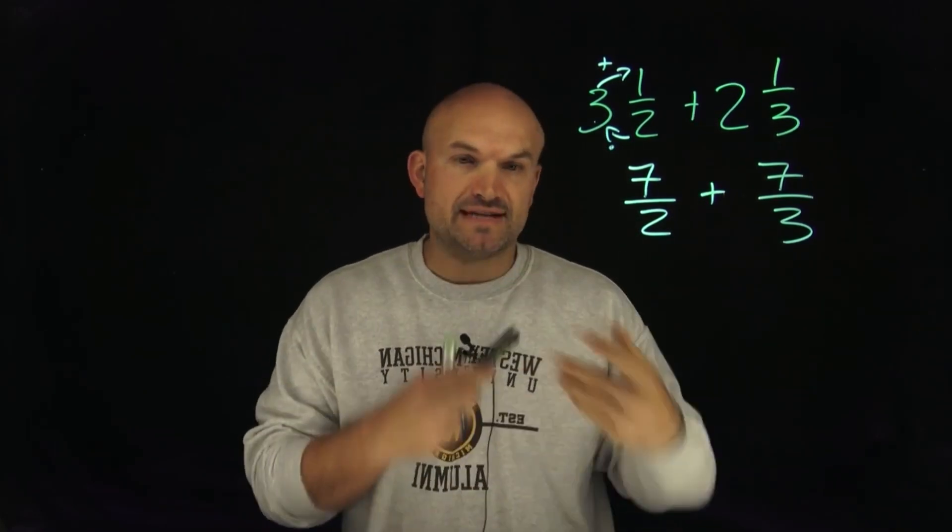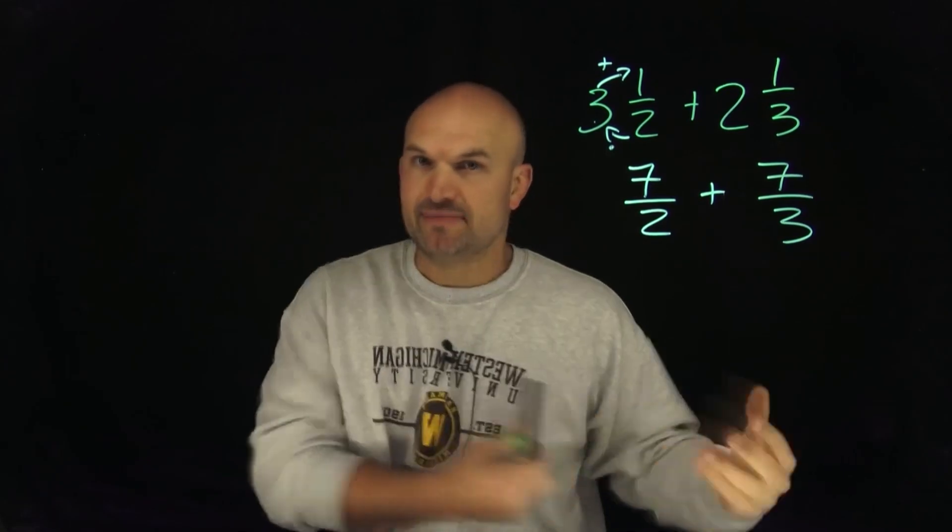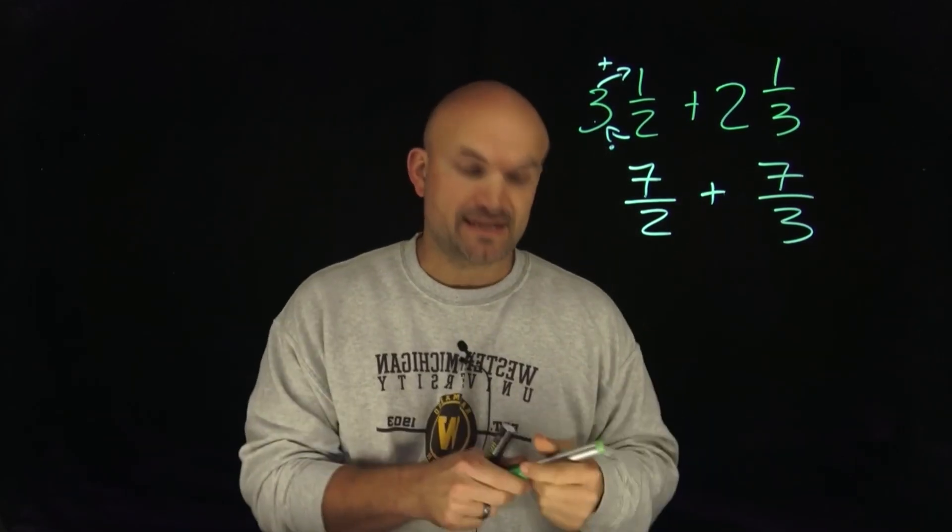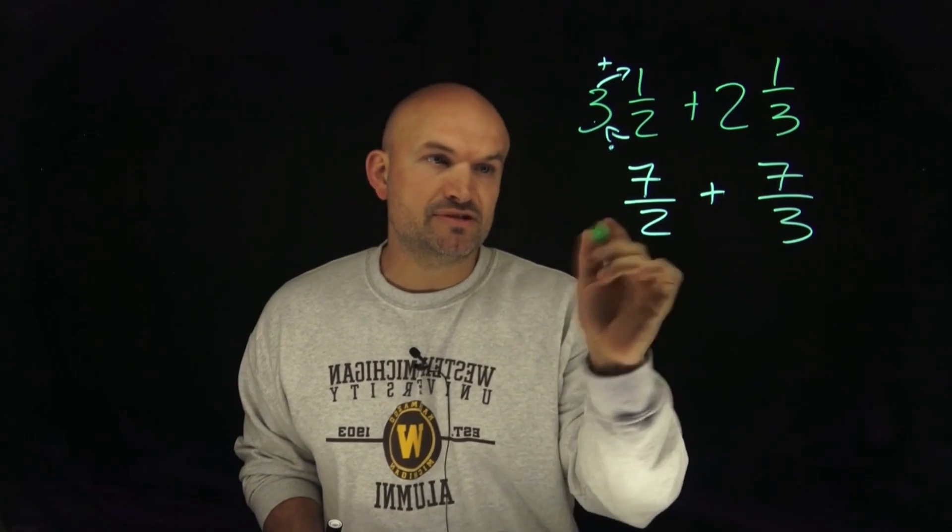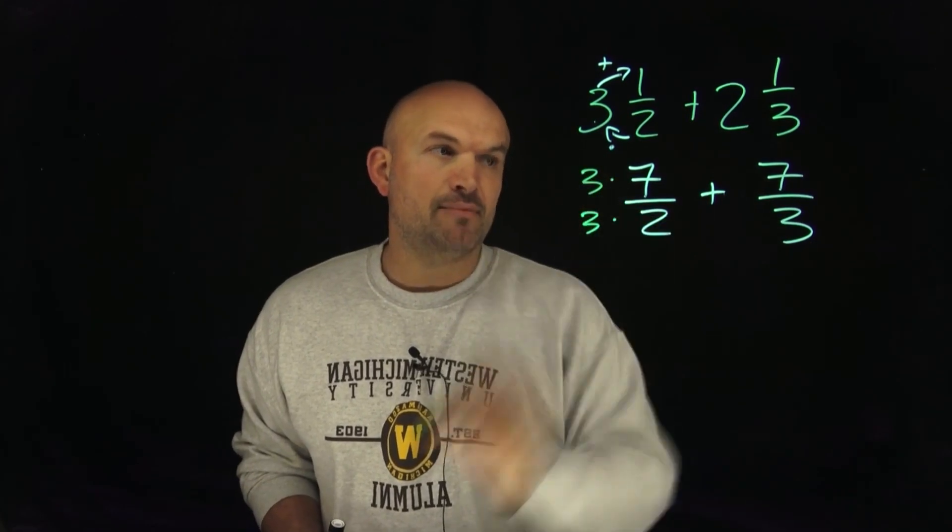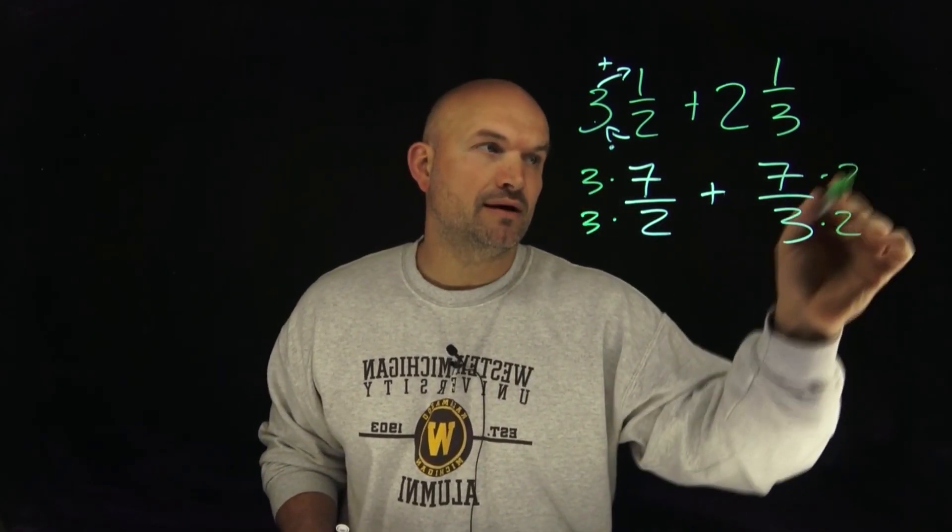Now remember, when we have different denominators, we need to obtain the least common denominator, and in this case that least common denominator is going to be 6. So all I need to do is multiply by 3 on both sides and then multiply by 2 on both sides.